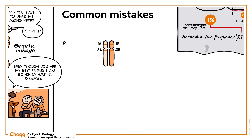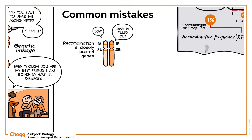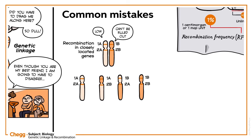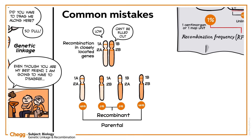Although the chances of recombination in closely located genes are significantly low, the possibility cannot be ruled out. Sometimes crossing over may also occur between genes that are closely located, but the likelihood of such recombination is extremely low due to the very few sites of crossing over. As a result, the degree of randomness for recombination will also be significantly low.